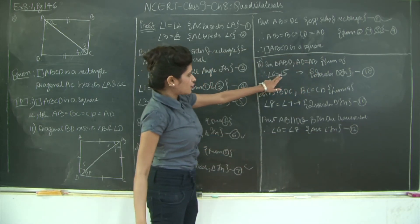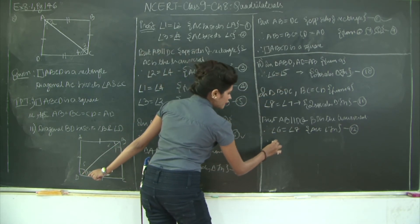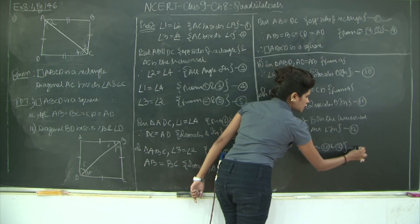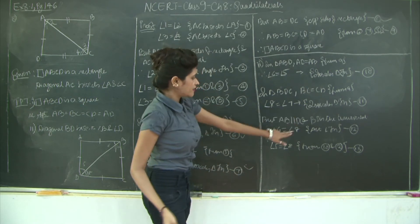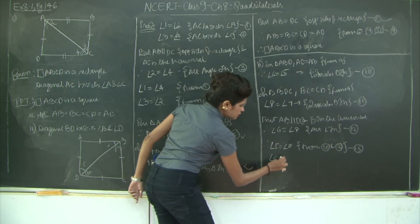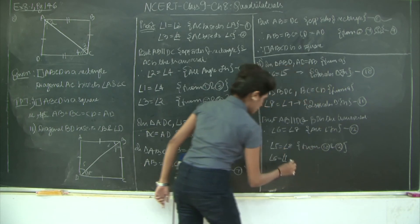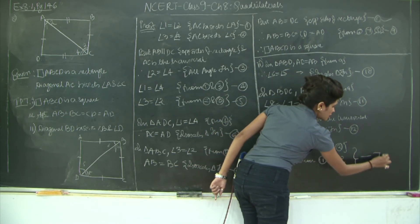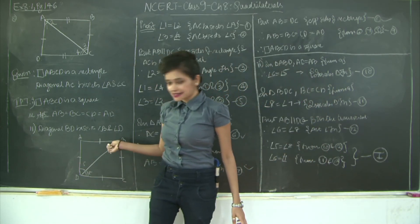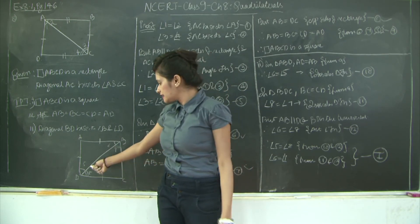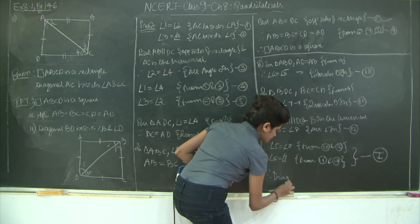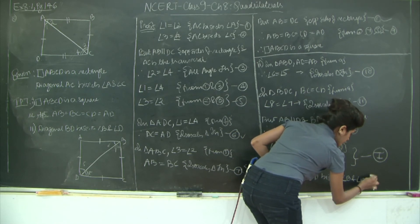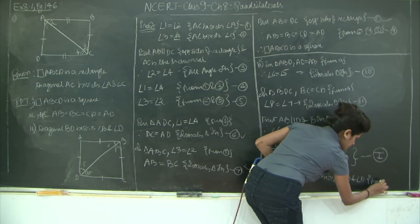From statements 10 and 12, angle 5 equals angle 8 — mark as statement 13. From statements 11 and 12, angle 6 equals angle 7. Since angle 5 equals angle 8, angle D is bisected by BD. Since angle 6 equals angle 7, angle B is also bisected by BD. Therefore, diagonal BD bisects angles B and D.